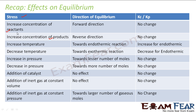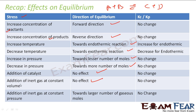For the direction of equilibrium: increasing concentration of reactant moves equilibrium forward. Increasing the product moves it backward. If you increase temperature in an endothermic reaction, it moves toward the endothermic side; if you decrease temperature, it moves toward the exothermic side. Increase pressure — it moves toward lesser number of moles. Decrease pressure — it moves toward more number of moles. Addition of catalyst — no effect. Add inert gas at constant volume — no effect. At constant pressure — there is an effect; volume increases, so equilibrium moves toward larger number of molecules.